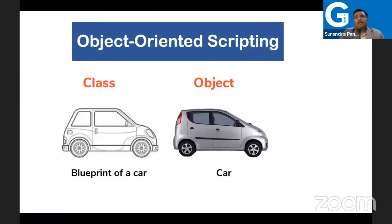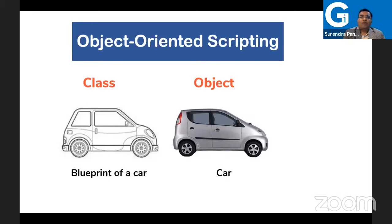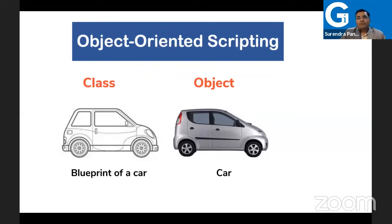Now, for those not aware of what object and class mean: when you say object-oriented, first we need to understand what is a class and what is an object. A class is a blueprint, whereas an object is a real thing. What you see is an object. A design is a class. For example, a building architecture is a class, whereas the real building is an object. Similarly, the design of a car is a class — a blueprint — whereas the real car, like an auto or a wagon, is the object.